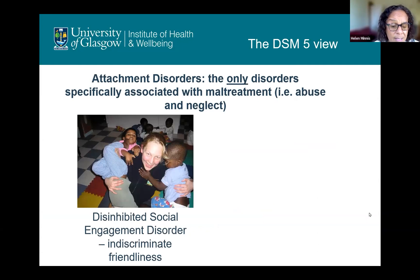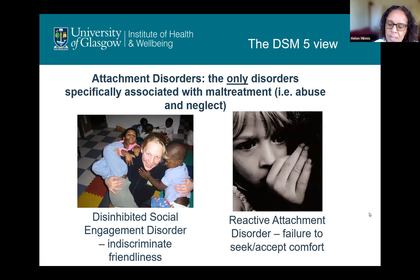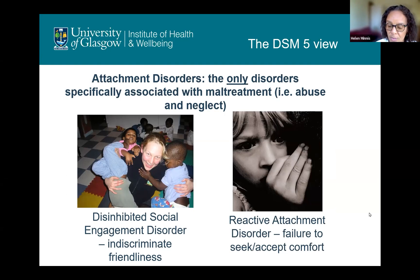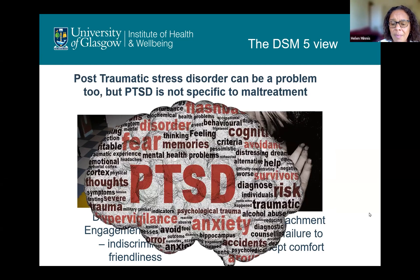There's disinhibited social engagement disorder, which is characterised by children who are over-friendly to quite an irritating and disturbing degree. And then reactive attachment disorder, which is characterised by a failure to seek and accept comfort — and that is really a developmental emergency, because young children need adults to help them with everything. But post-traumatic stress disorder isn't specific to maltreatment, because you can develop PTSD from a bus crash, for example.